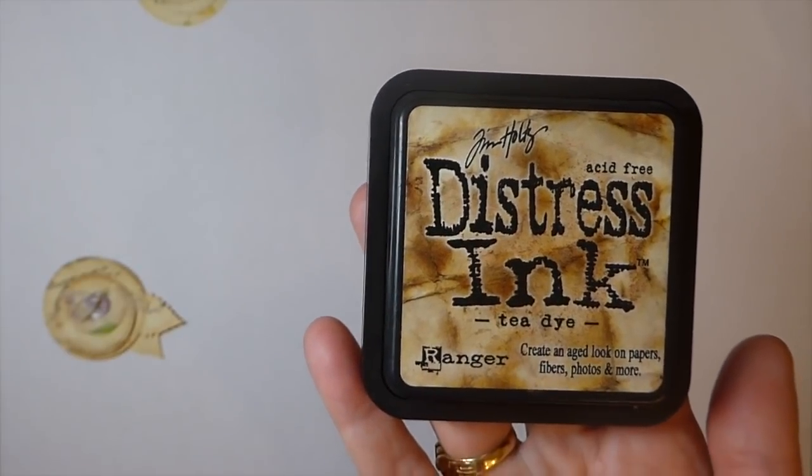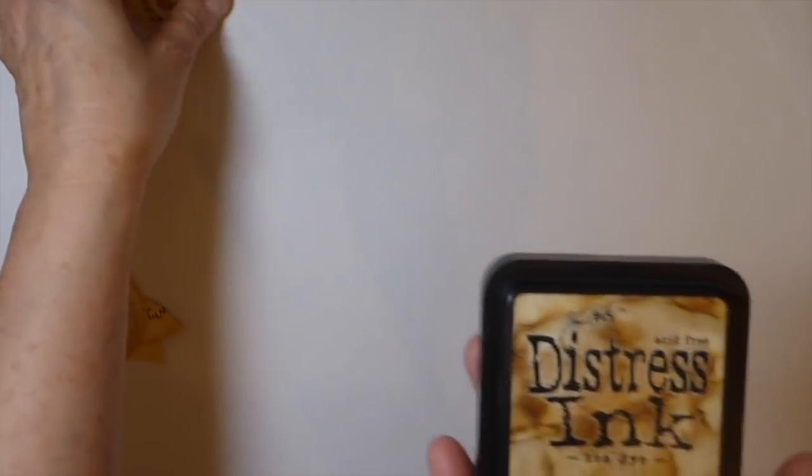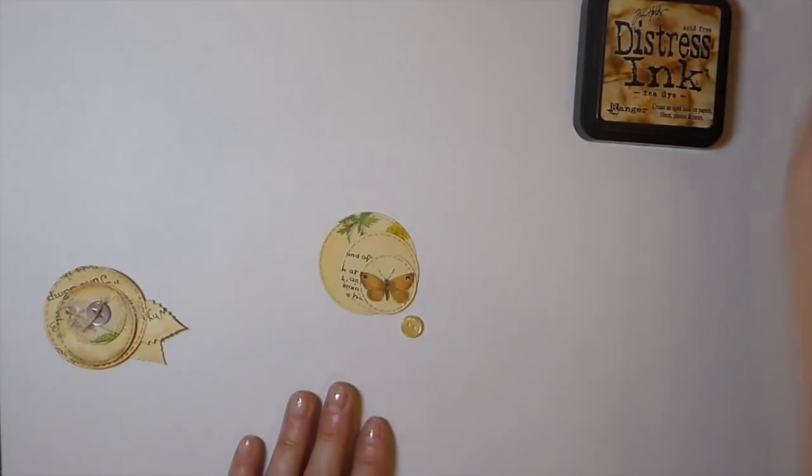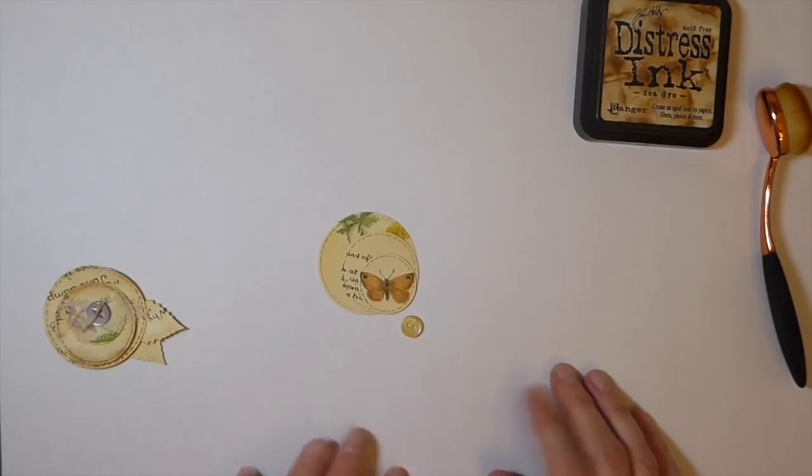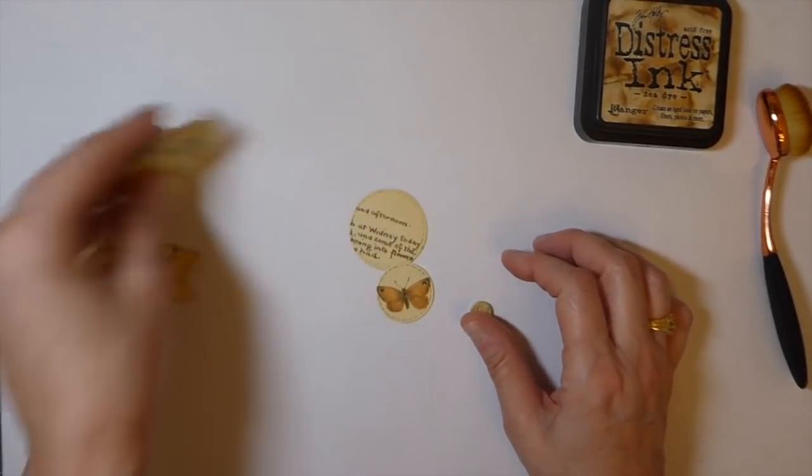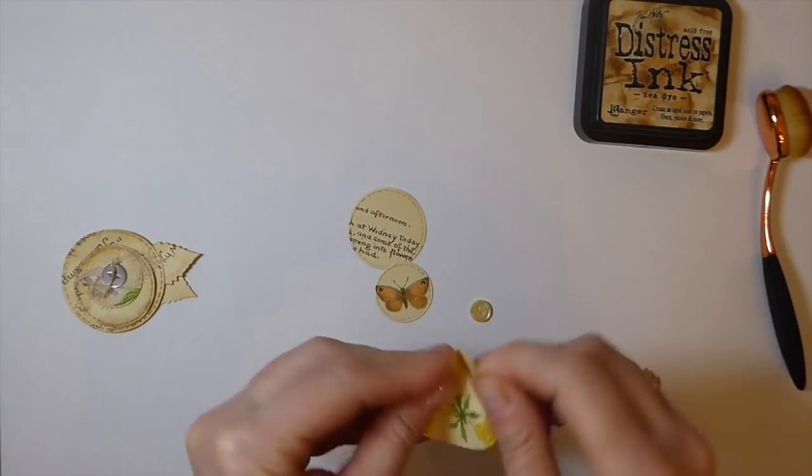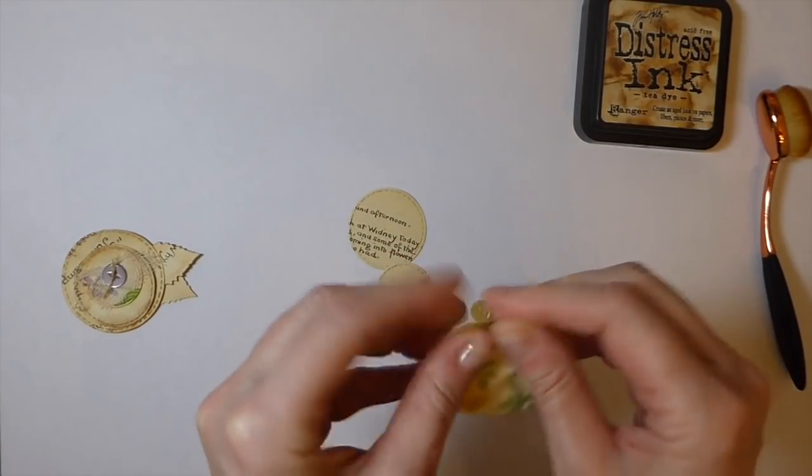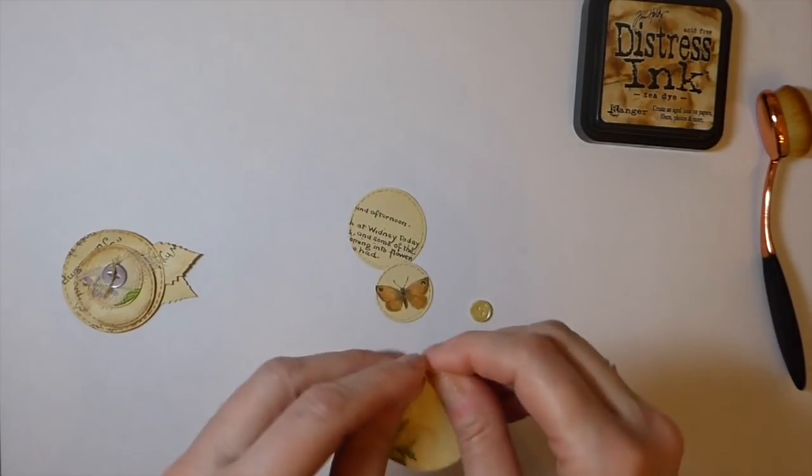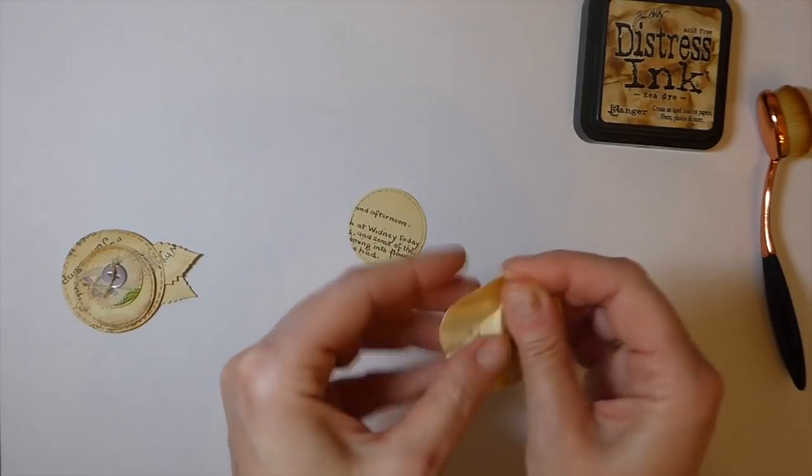And I didn't really feel as though it complimented the pages here, so I'm using the tea dye. Okay let's see, let's just get started. Now you could spritz these with water and get your heat gun out and dry them and that's going to really make them nice and crinkled, but for this project I'm just going to crumble them up.